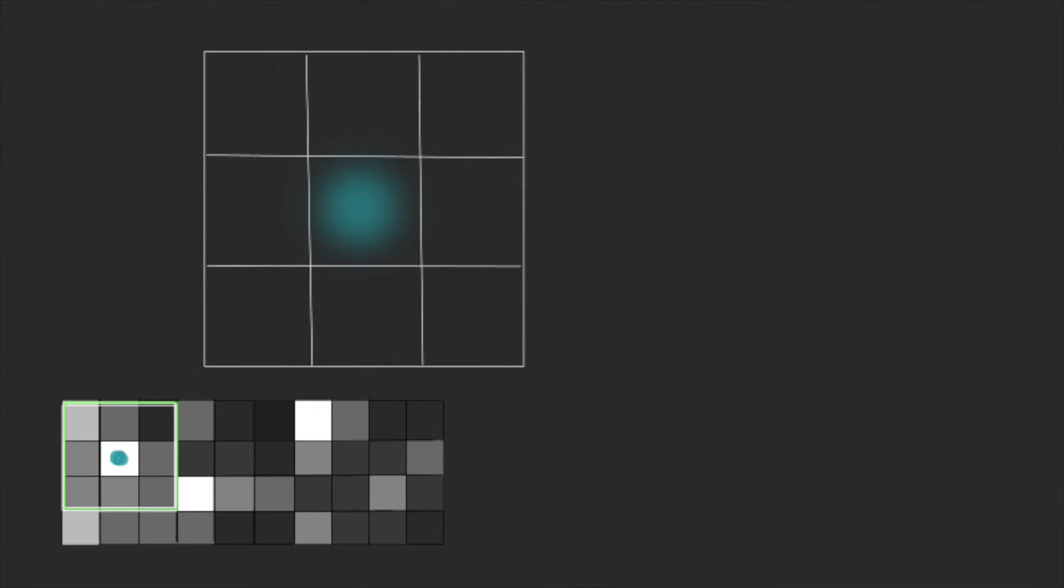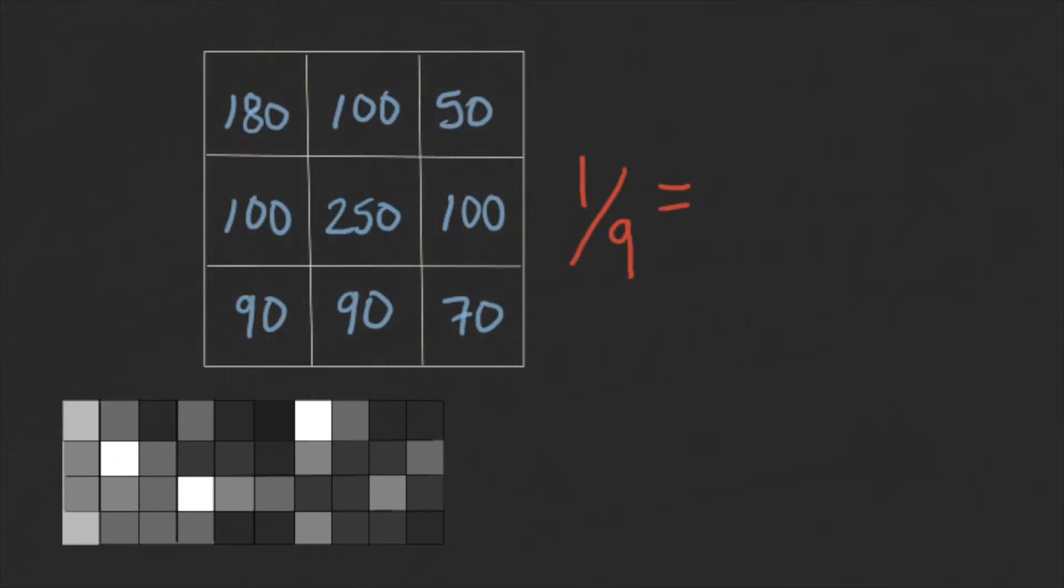We are considering the eight pixels around. Now we have to calculate the average of all the pixels in the kernel, and write it down in the target location of the new image.